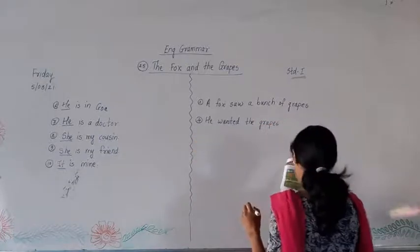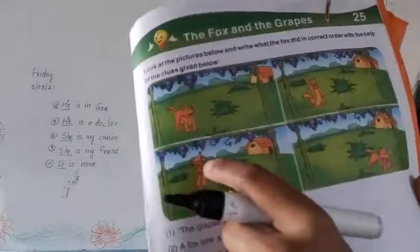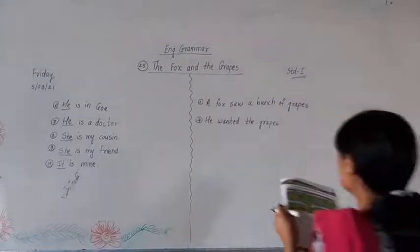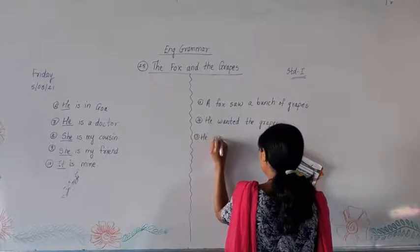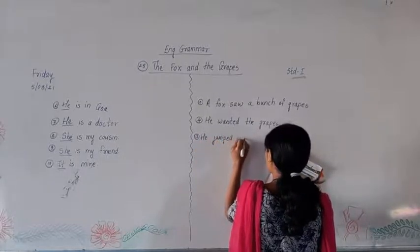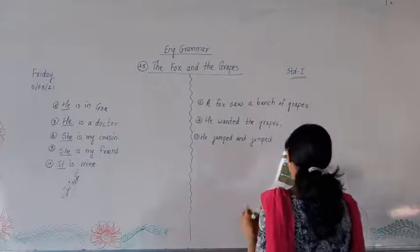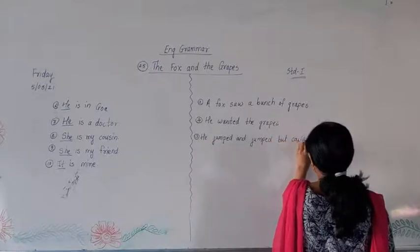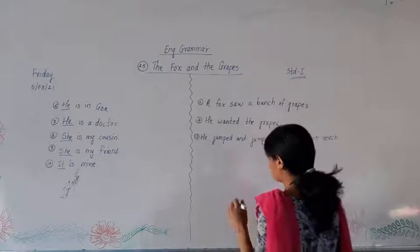After that, in third picture, he is jumping. Can you see fox jumping for grapes? Yes. So which will be third sentence? He jumped and jumped, but could not reach the grapes.